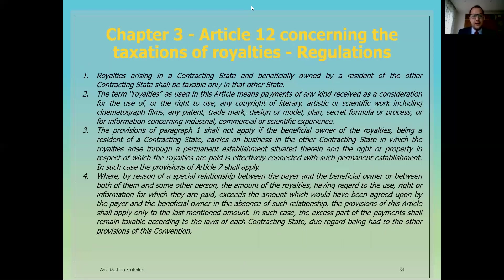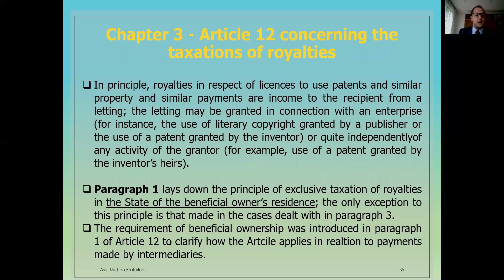This is Article 12, which concerns the taxation of royalties. The first paragraph establishes that royalties arising in a contracting state and beneficially owned by a resident of the other contracting state shall be taxable only in that other state. In principle, royalties in respect of licenses to use patents or similar property and similar payments are income to the recipient from a letting. The letting may be granted in connection with an enterprise — for instance, the use of literary copyright granted by a publisher or the use of a patent granted by the inventor — or quite independently of any activity of the grantor.